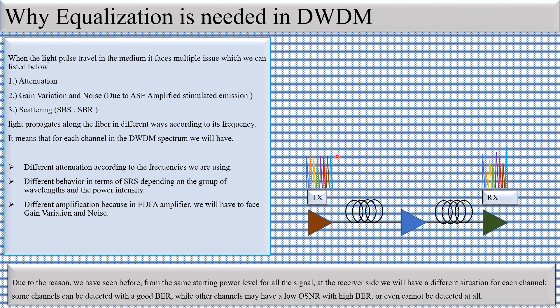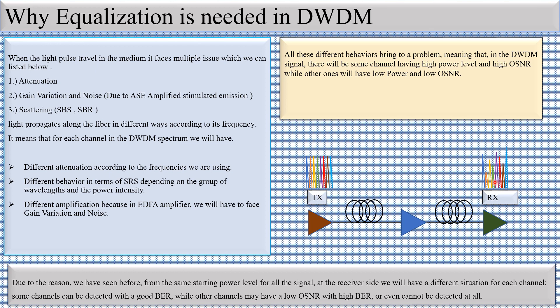The receive power of some channels becomes high and some becomes low. In the same way, the OSNR also changes and the bit error rate also changes for different wavelengths. But the requirement is that at the receiver side the power of all channels should be the same — and that is equalization.